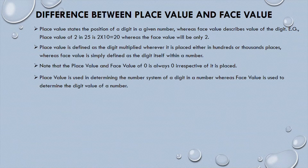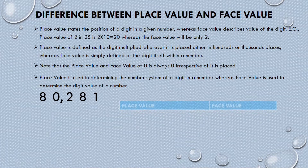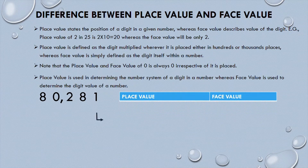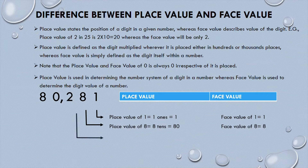Number four: place value is used in determining the number system position of a digit in a number, whereas face value is used to determine the digit value of a number. For example, in 88,281: the place value of 1 is 1 and the face value is also 1.